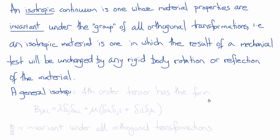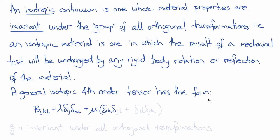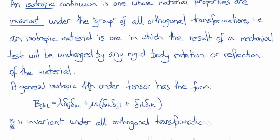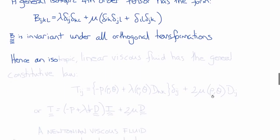So in general, any fourth-order tensor that is isotropic can be written in the following form: B_ijkl is equal to lambda times delta_ij delta_kl plus mu times the quantity delta_ik delta_jl plus delta_il delta_jk. These are the components of the fourth-order tensor that is invariant under all orthogonal transformations, and this means we have reduced the number of independent constants in our fourth-order tensor from 36 to 2, being lambda and mu.